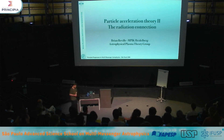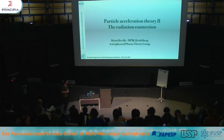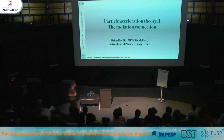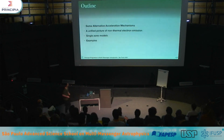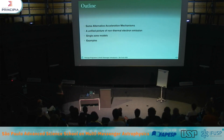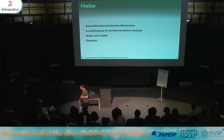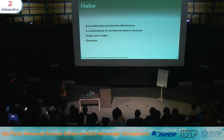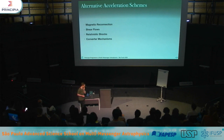Then I want to make the connection to radiation. I want to give a slightly intuitive introduction to the key relativistic emission processes, particularly for electrons, which avoids a lot of the rather ugly mathematics that's very often used in electromagnetism. Quick outline: some alternative mechanisms for acceleration, then a unified picture of non-thermal electron emission, and then some simple tools. Nowadays there are many open source packages for non-thermal emission models, single zone models, but it's nice to be able to do back-of-the-envelope calculations. I'll finish with a handful of interesting and timely examples.